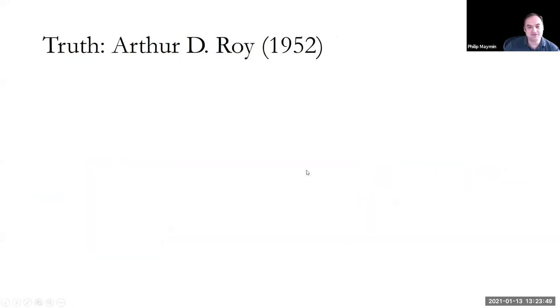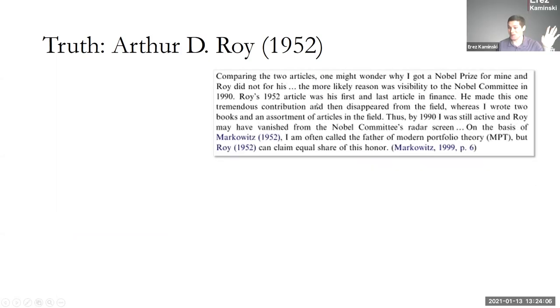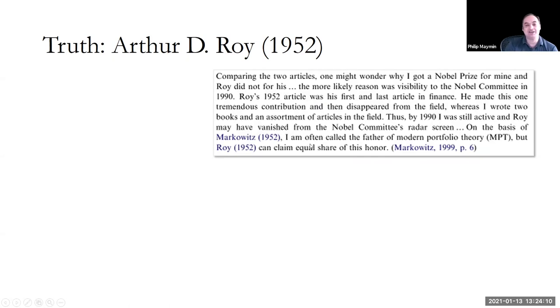The truth is there was another person at that time, Arthur D. Roy. Has anyone here ever heard of Arthur D. Roy? Not all at once. No, no one's heard of Arthur D. Roy. When Markowitz got his Nobel Prize, he's a very gracious person. He was writing in his acceptance speech. Arthur D. Roy wrote an article very similar to what Markowitz wrote in 1952, same year, but with some differences.